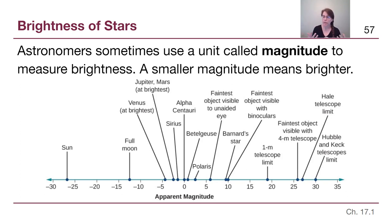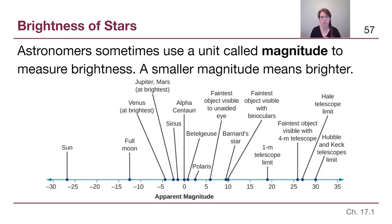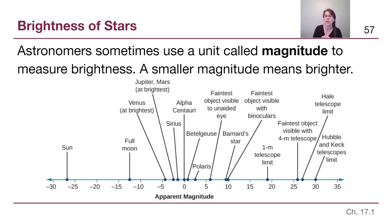Hipparchus came up with a catalog scheme for determining star brightness by putting stars into category one for the brightest, and category two for the next brightest, down to category six which were almost too dim to see but visible if you looked out of the corner of your eye. When modern astronomers tried to quantify this system better, they realized some stars in category one were actually brighter and needed their own category. Since the numbers one through six were already used, the only way to go was backwards — so category zero, then negative one, and so on.